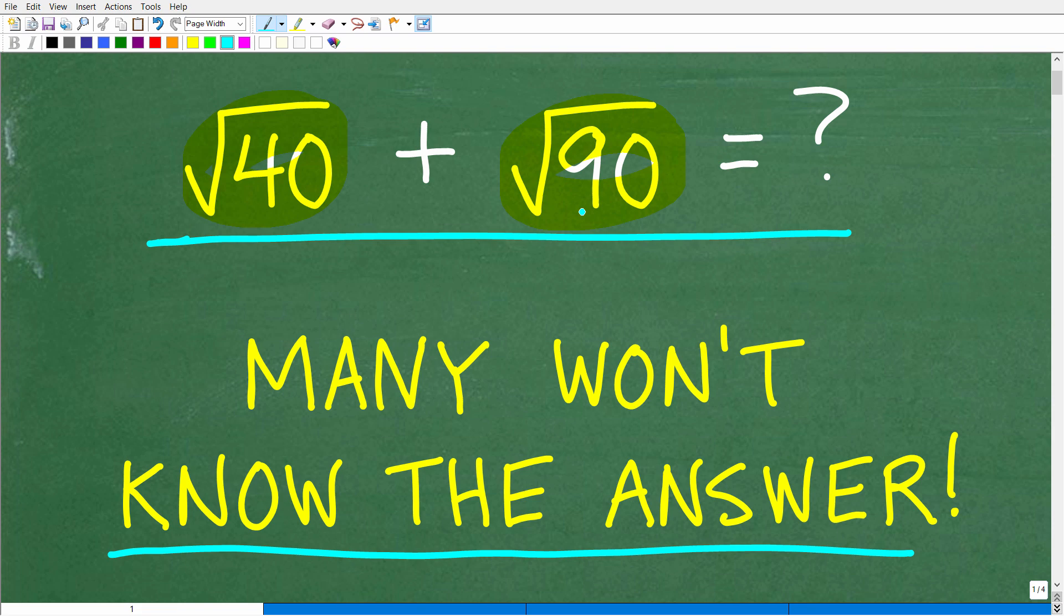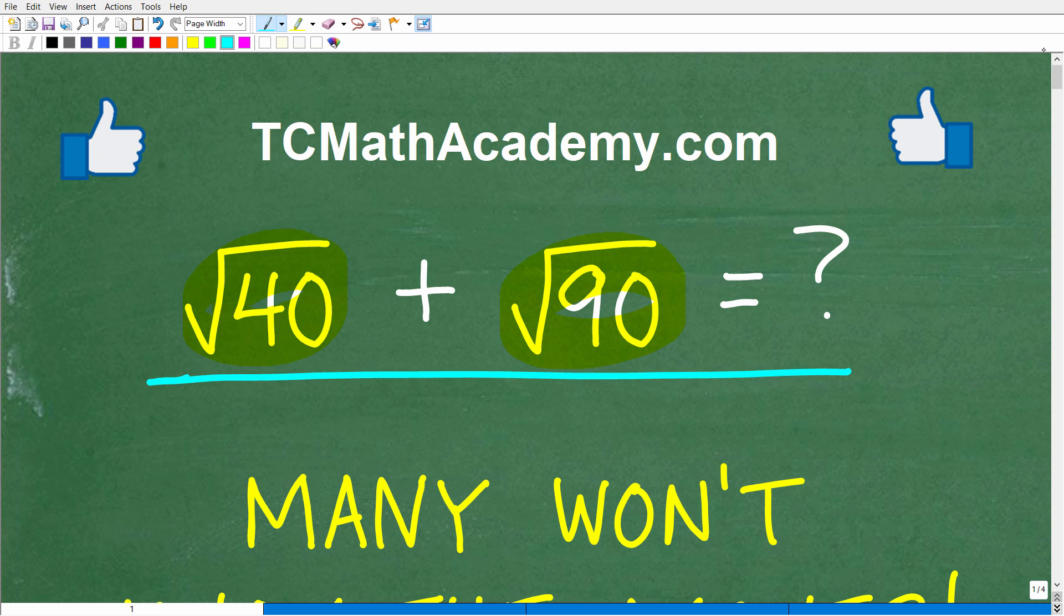And these properties are not that difficult, but if you don't understand them, you will not be able to do a problem like this. We have the square root of 40 plus the square root of 90. If you have the answer, that is fantastic. Go ahead and put that into the comment section. I'll show you the correct answer in just one second, and then of course I'm going to walk through the solution to this problem step by step.